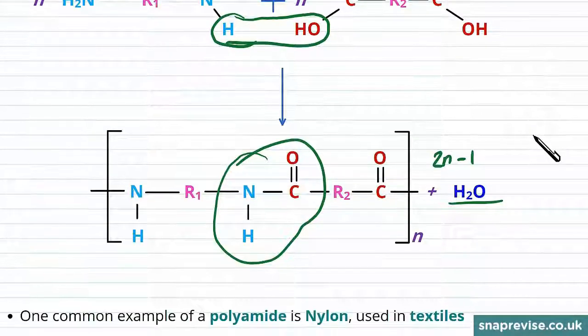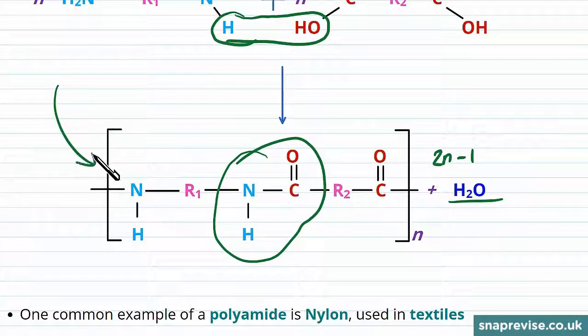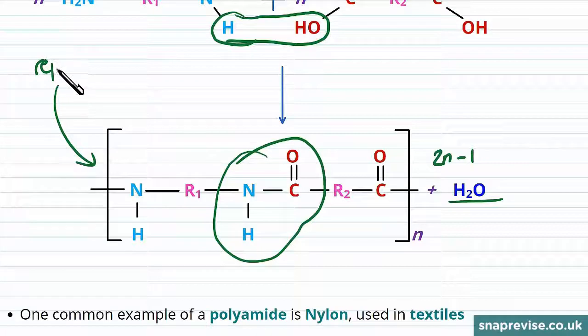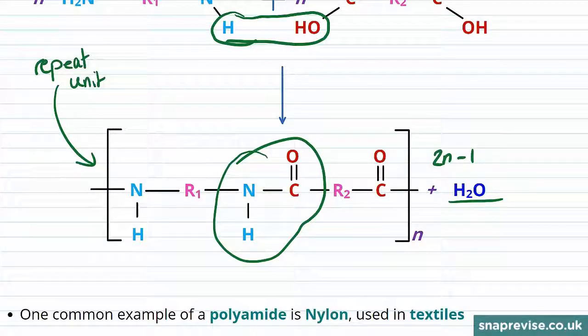And this with the square brackets shows the repeat unit, and as before we put the small n on the right-hand side of the brackets to show that there were n of these repeat units making up the polymer.